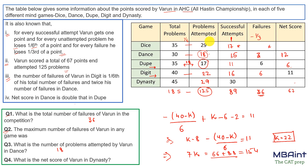Failures column: 12 + 3 + 6 + 6 = 27, so dynasty failures = 36 − 27 = 9. Now for dynasty: successful attempts = 30 and difference for unattempted = 6, so unattempted penalty = −1. Net score = 30 − 1 − 3 = 26. So dynasty net score = 26.